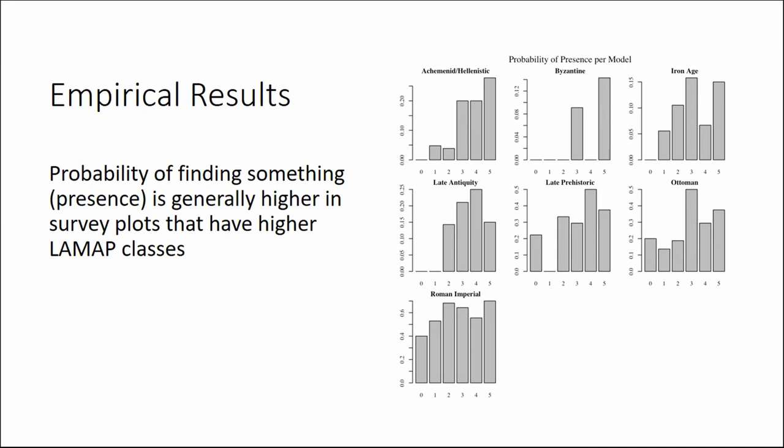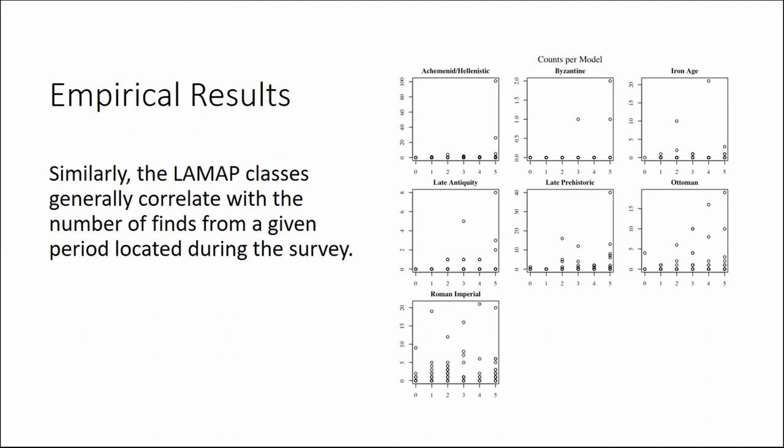Results are also complemented by the fact that some periods are better represented in the archaeological record than others — some periods are just harder to find in general. For example, the Iron Age is quite difficult to find at all, which brings the totals down in the aggregate. Additional plots showing numbers of finds — not just presence/absence — also generally show the model working fairly well, aside from some outliers.